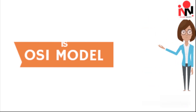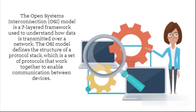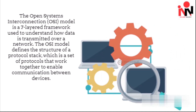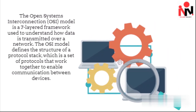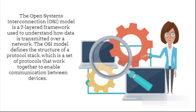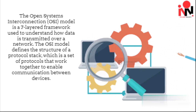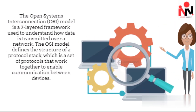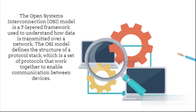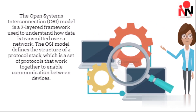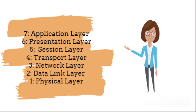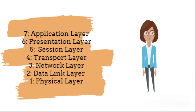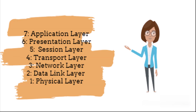The Open Systems Interconnection (OSI) model is a seven-layered framework used to understand how data is transmitted over a network. The OSI model defines the structure of a protocol stack, which is a set of protocols that work together to enable communication between devices. The seven layers of the OSI model are: application layer, presentation layer, session layer, transport layer, network layer, data link layer, and physical layer.